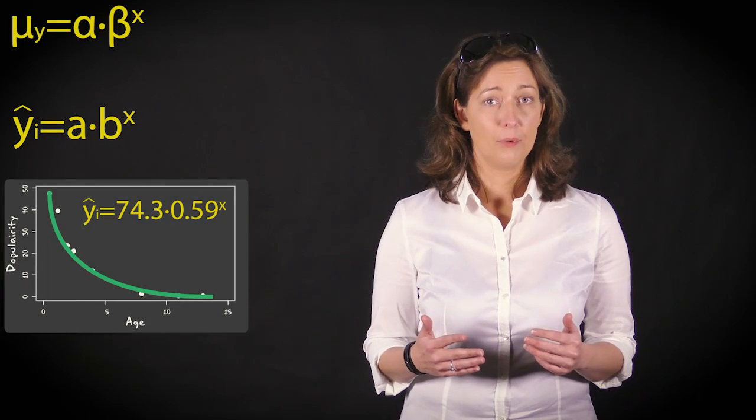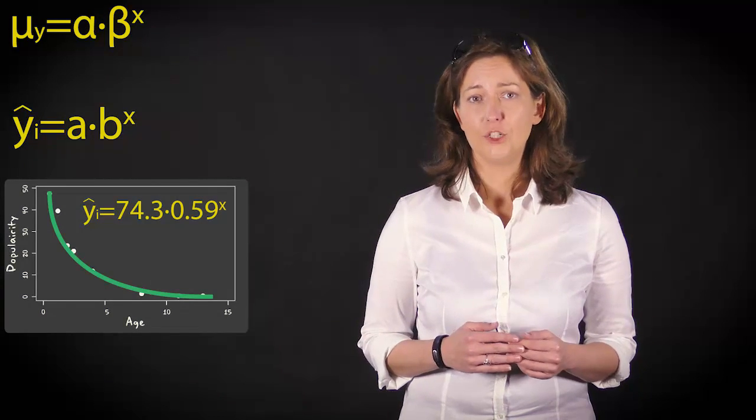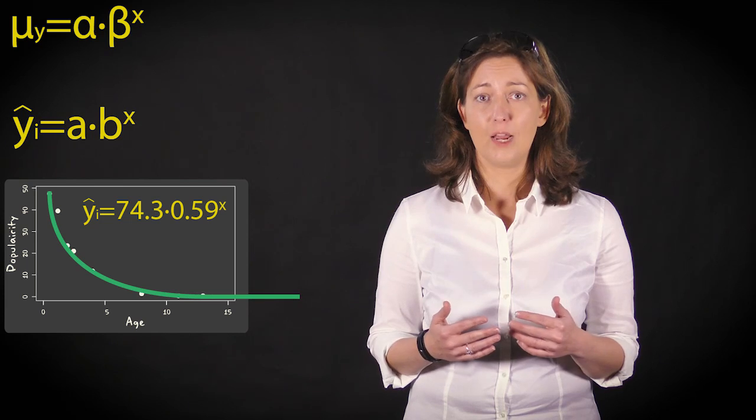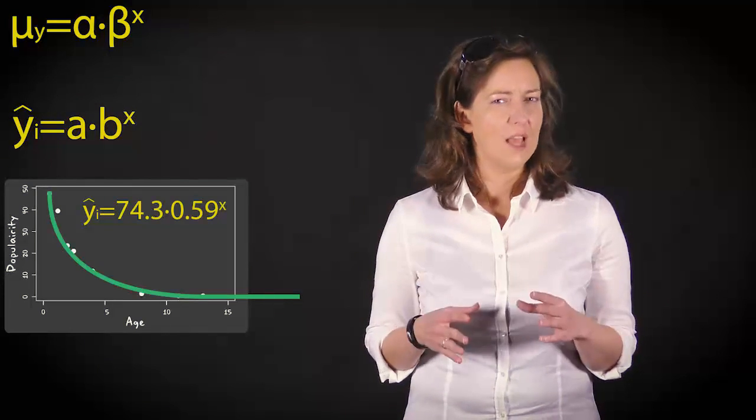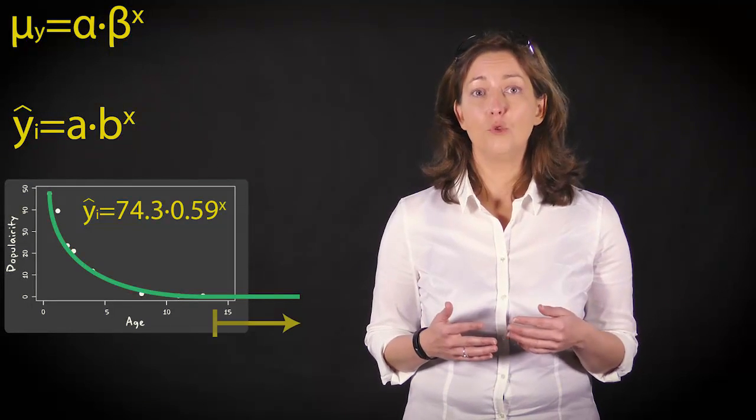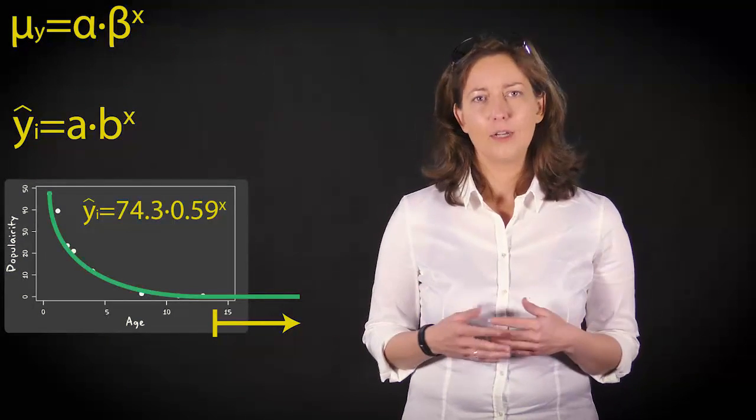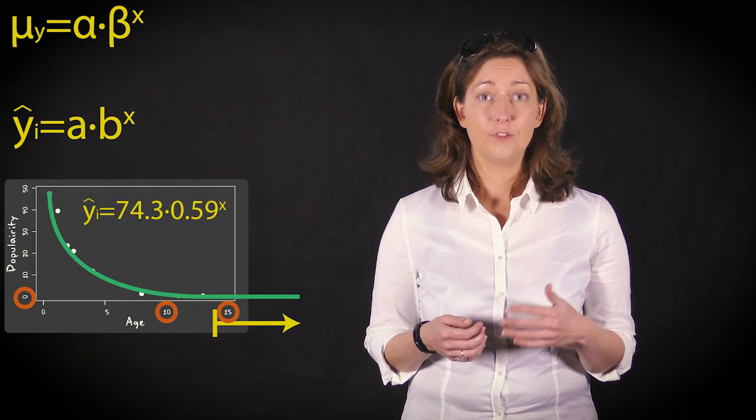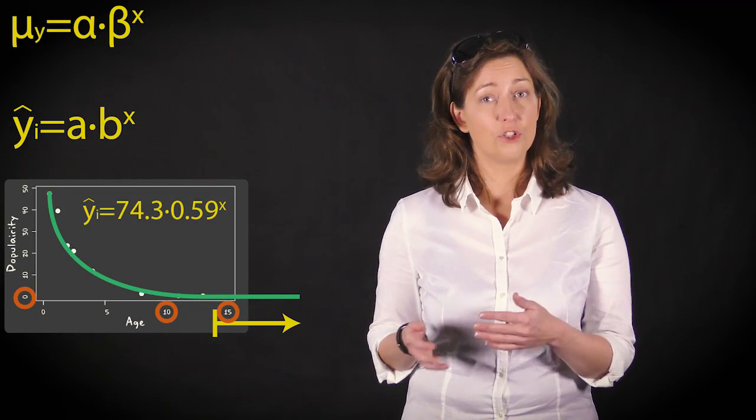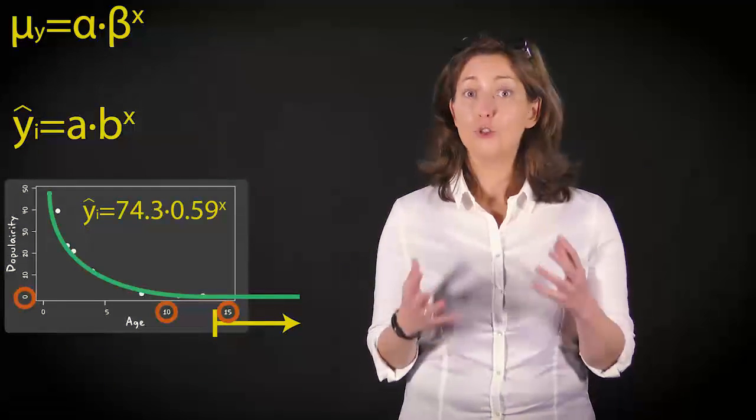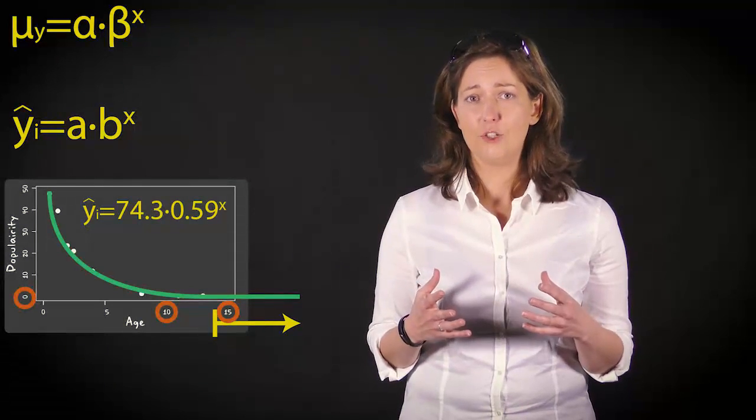One last thing to remember. Just like in linear regression, you should be very careful extrapolating values beyond the observed range of the predictor. Always ask yourself whether predicted values beyond the range for which you have observed values make sense. In our example, the predictions for older cats of 10 to 15 years will approach zero. It remains to be seen whether the exponential relation truly holds in this age range. Older cats can still be pretty cute!